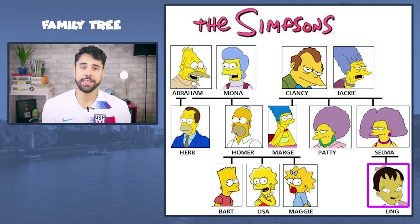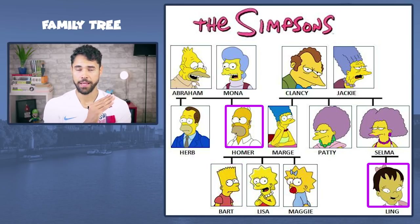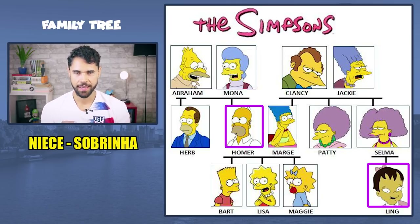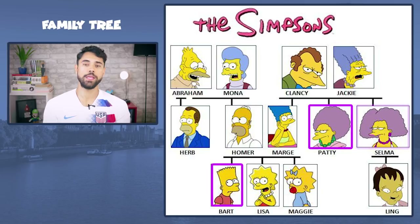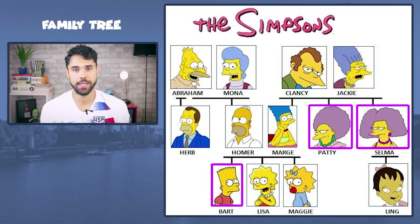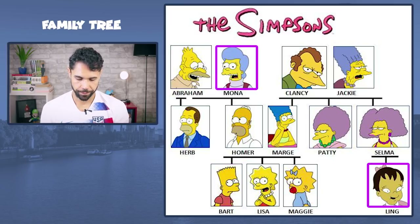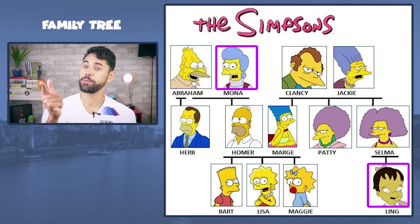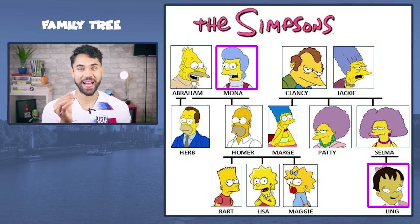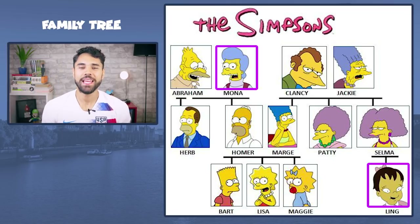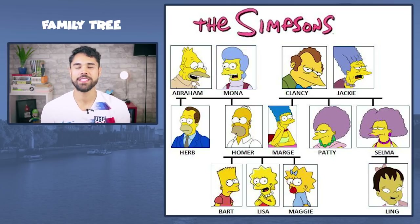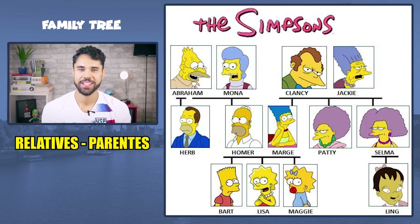E já que estamos falando da Ling, ela é o quê do Homer? Ela é sobrinha dele. Então ela é niece. Suponhamos que ele tivesse um sobrinho — aí em inglês sobrinho seria nephew. E a Ling é parente da Mona? Não, é parente. Parente em inglês, parente no geral, você vai dizer relatives.